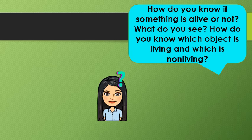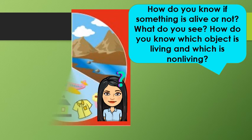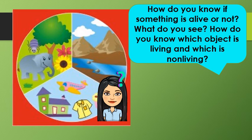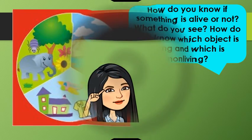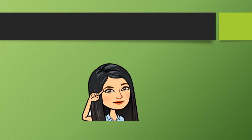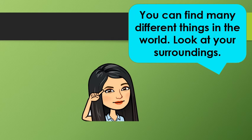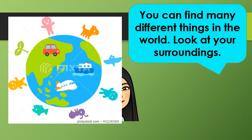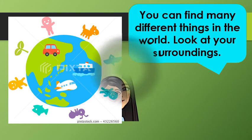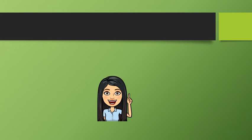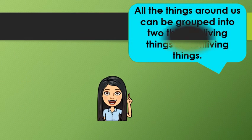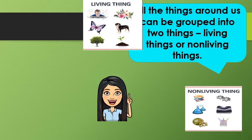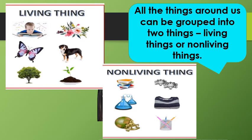I have a question for you, children. How do you know if something is alive or not? What do you see? How do you know which object is living and which is non-living? I want you to look at your surroundings. You will see that you can find many different things in the world. All the things around us can be grouped into two: living things or non-living things. Can you name a living thing? How about one non-living thing?